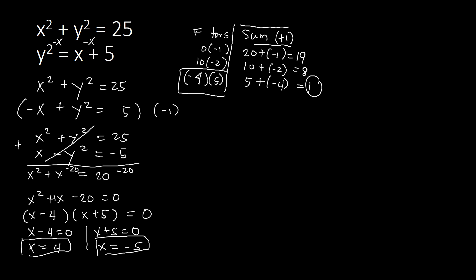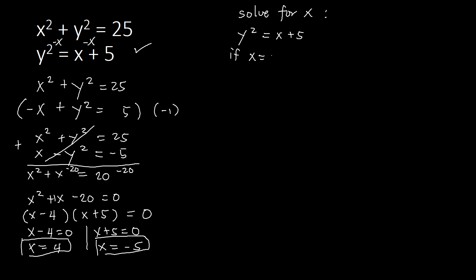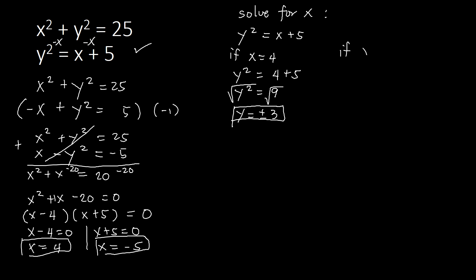To solve for y, we choose one of the original equations. Using the second equation y squared equal to x plus 5, and substituting x equal to 4, we get y squared equal to 4 plus 5, which is 9. Taking the square root, y equals positive or negative 3. So when x is 4, our y values are 3 and negative 3.